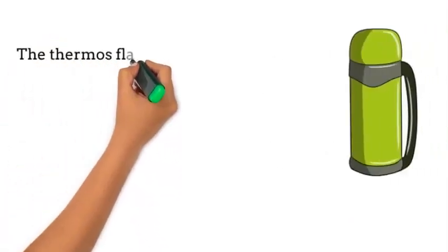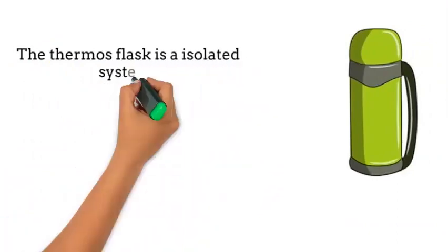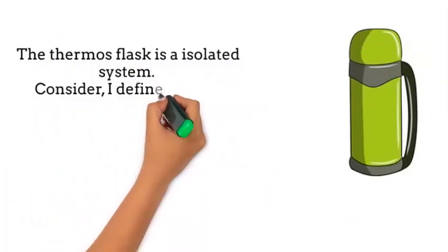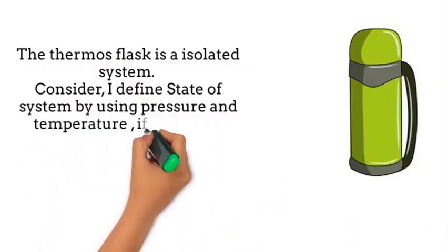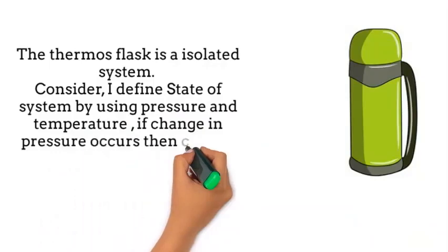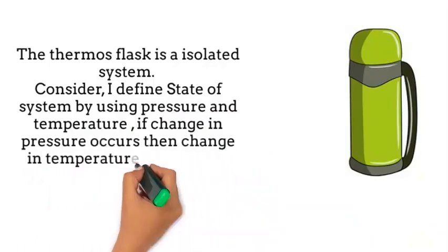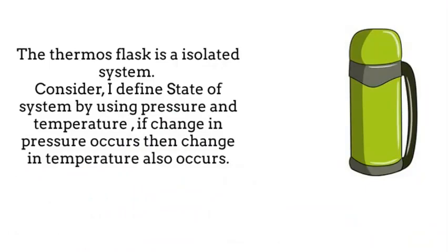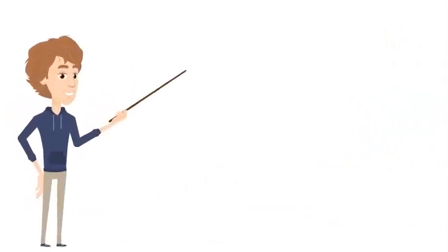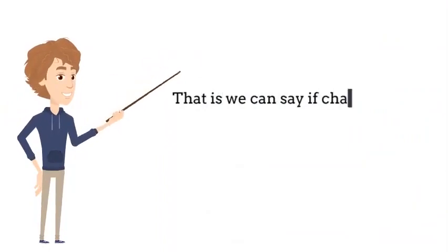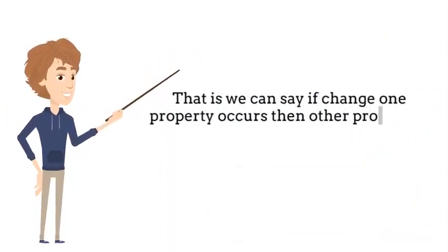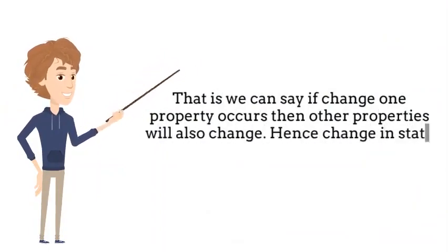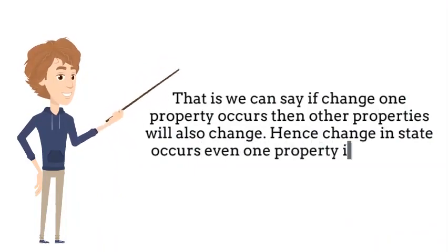The thermos flask is an isolated system. Consider I define the state of the system by using pressure and temperature. If a change in pressure occurs, then a change in temperature also occurs. That is, we can say if a change in one property occurs then other properties will also change. Hence, a change in state occurs even if one property is changed.